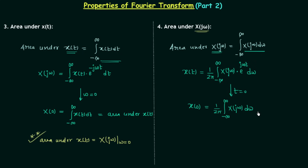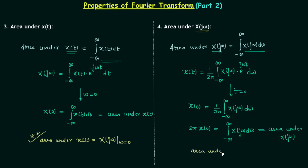Multiplying both sides by two pi, we have two pi times x(0) equal to the integration from minus infinity to infinity of X(jω) dω. The right hand side gives us the area under the frequency domain signal X(jω). So the area under X(jω) equals two pi multiplied by the time domain signal x(t) evaluated at t equal to zero, where x(t) is the signal whose Fourier transform is X(jω). This is the fourth property. If you have any doubts, you may ask in the comment section.